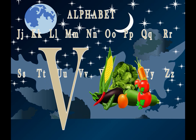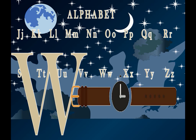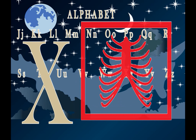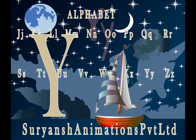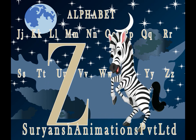V for vegetable. W for watch. X for xylophone. Y for yacht. Z for zebra.